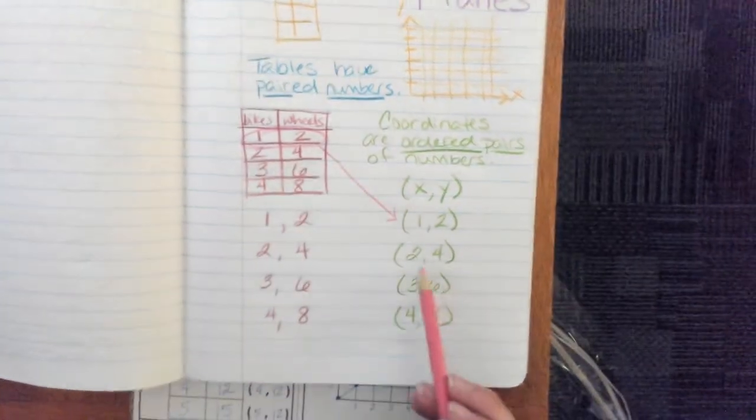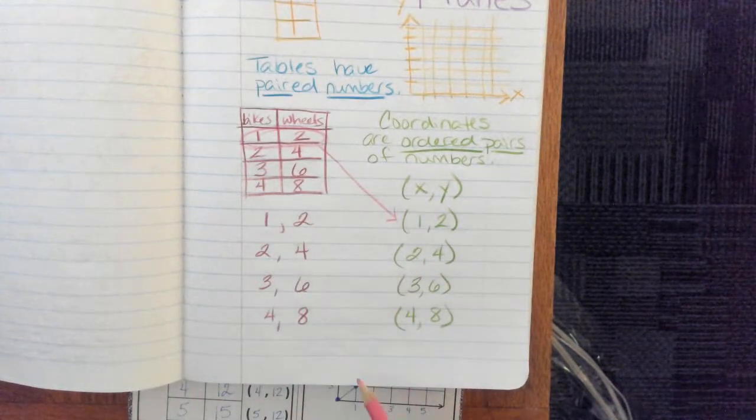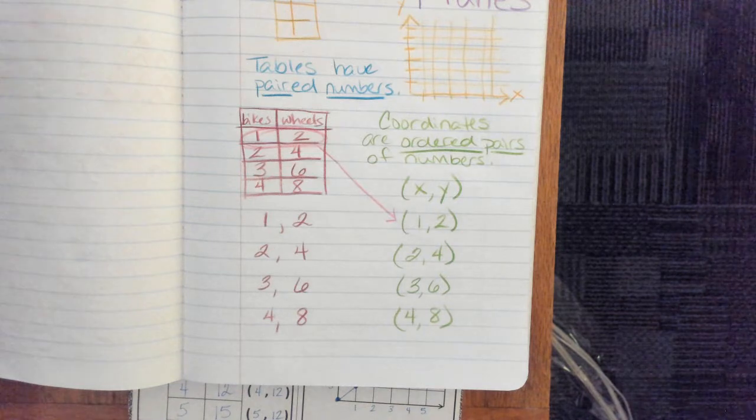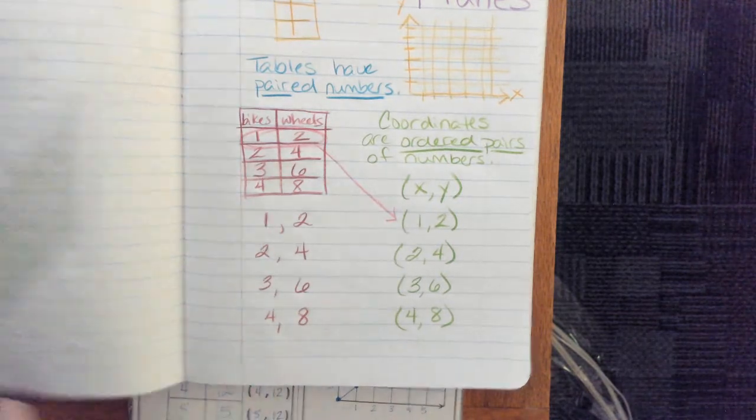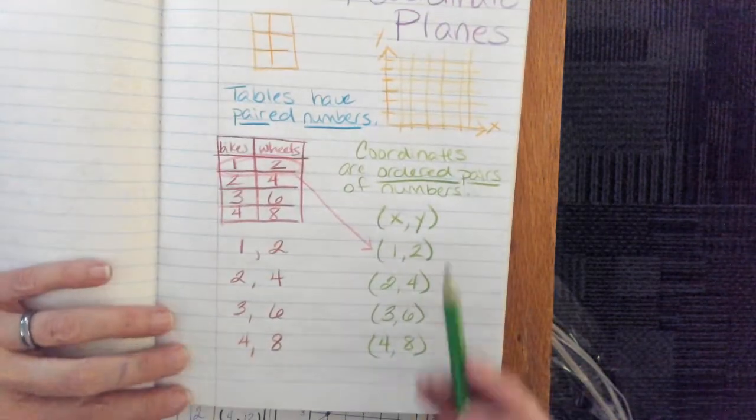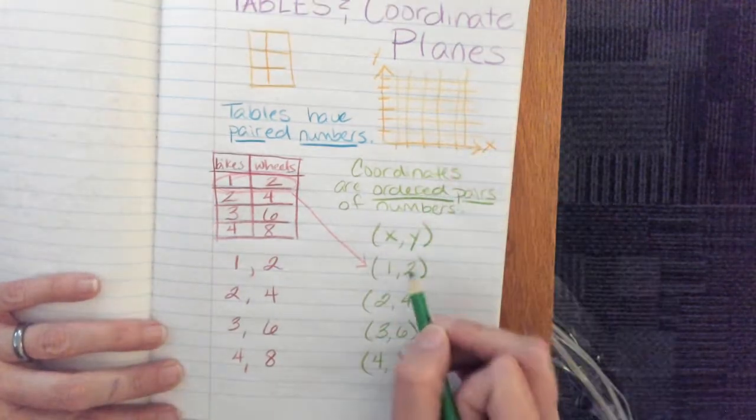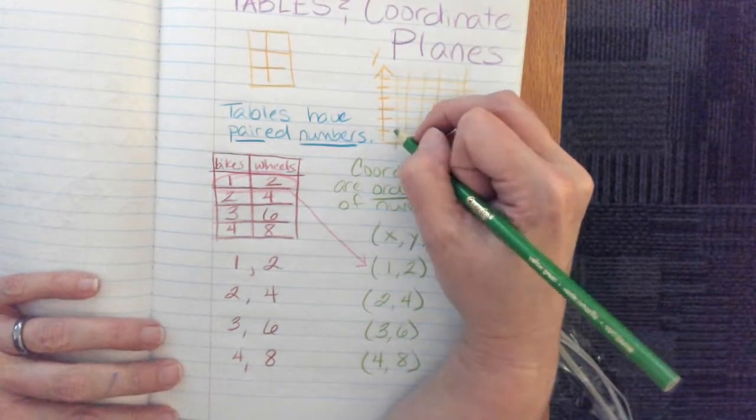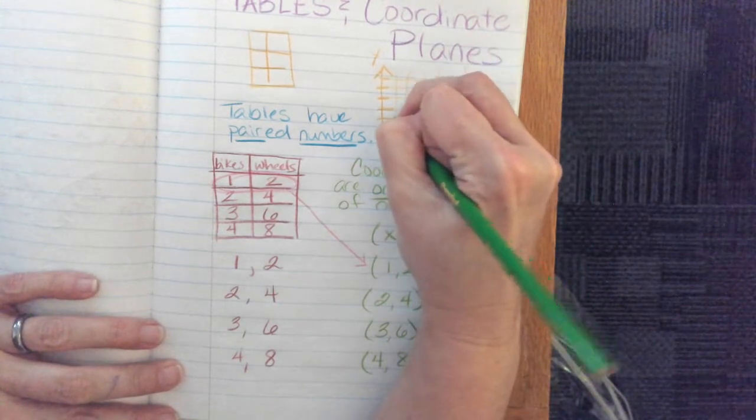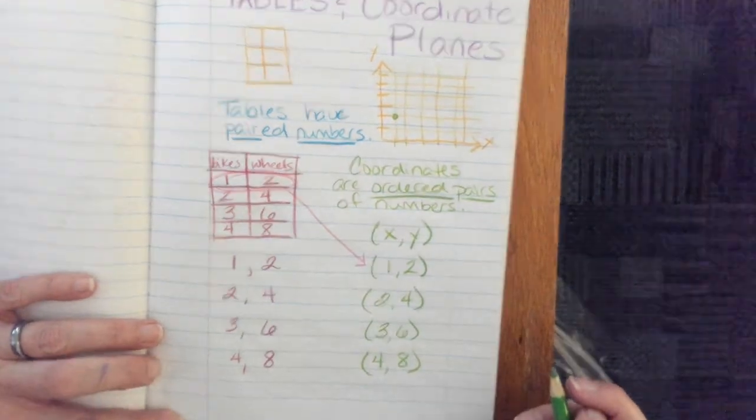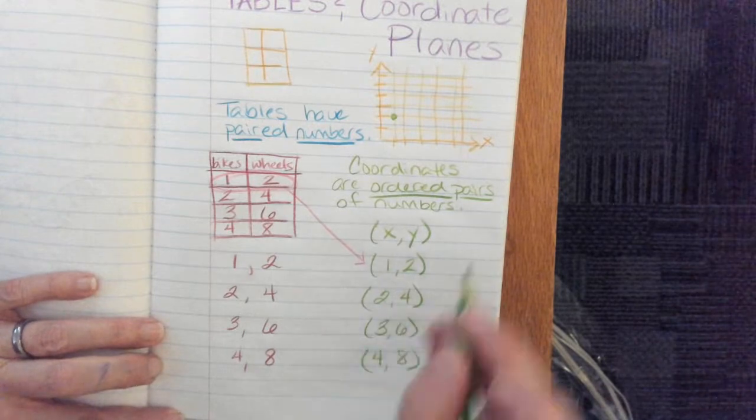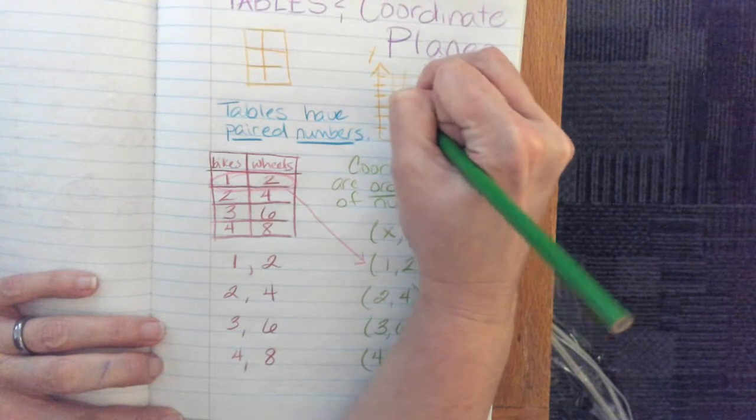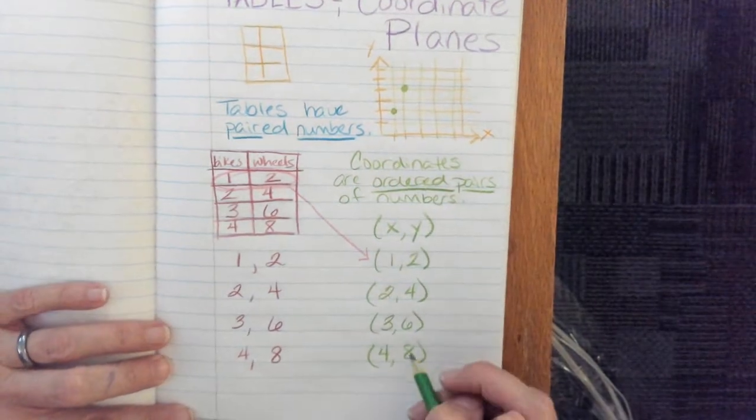And then the two, four, three, six, four, eight. So, on my coordinate plane up here, if I wanted to find one, two, the x goes first. So, there's one, one, two. I could put a dot there. Two, four, one, two, three, four. I could put a dot there.